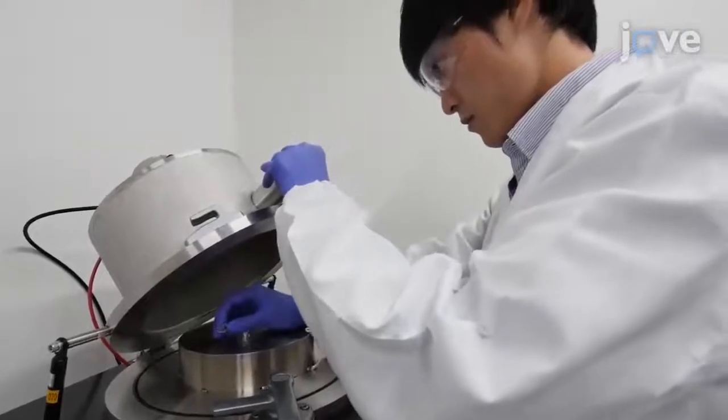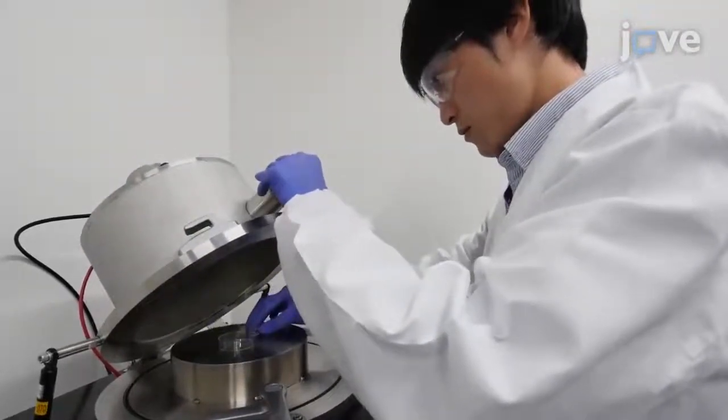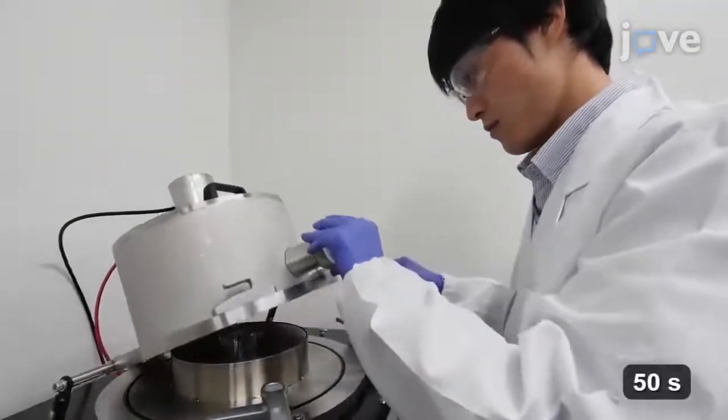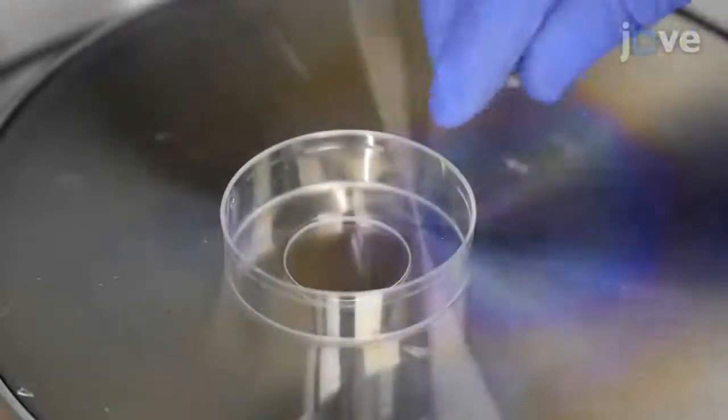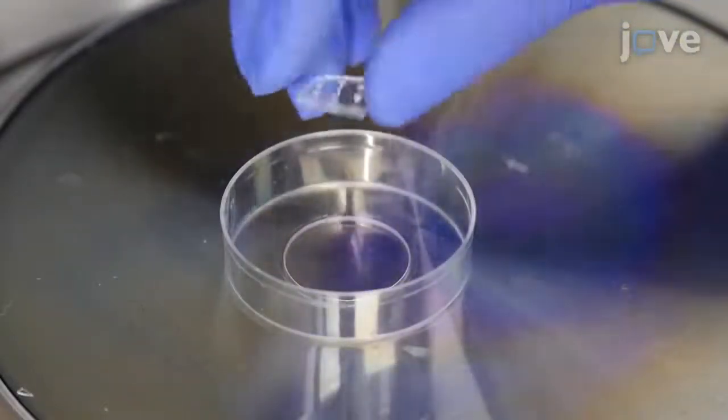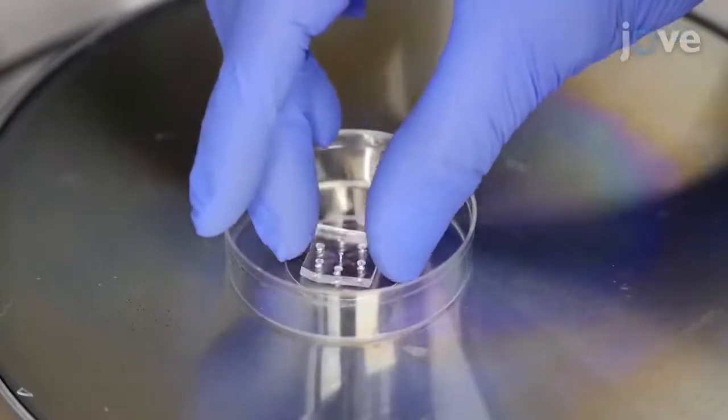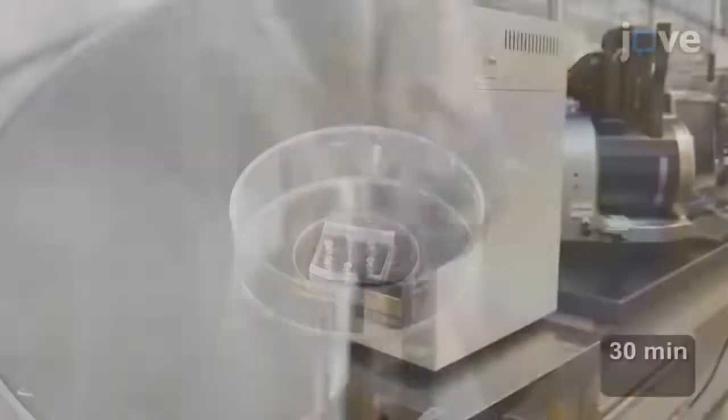Next, expose the PDMS and the 5-centimeter glass dish to air plasma for 50 seconds. To seal off the microfluidic network, press the PDMS layer onto the glass dish and cure it for 30 minutes at 65 degrees Celsius.